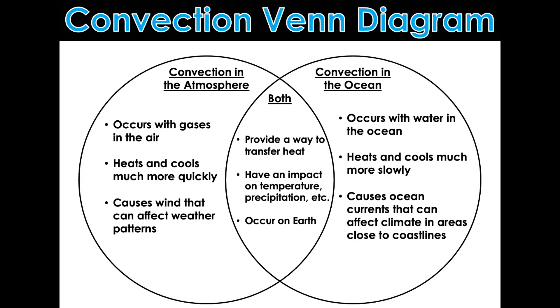So, the last thing you have in your notes is a Venn diagram, and it gives us facts that go with convection in the atmosphere, facts that go with convection in the ocean, and then things that are relative to both. So, in the atmosphere, it occurs with gases in the air, it heats and cools much more quickly than in the ocean. It causes wind that can affect weather patterns. In the ocean, it's going to occur with water in the ocean. It's going to heat and cool much slower and cause ocean currents that can affect climate in areas close to coastlines. For both, they are going to be a way to transfer heat. They have an impact on temperature, precipitation, climate, etc. And, of course, they both occur on Earth.